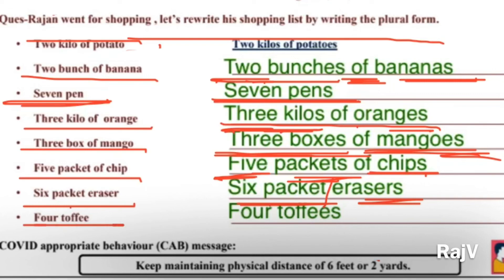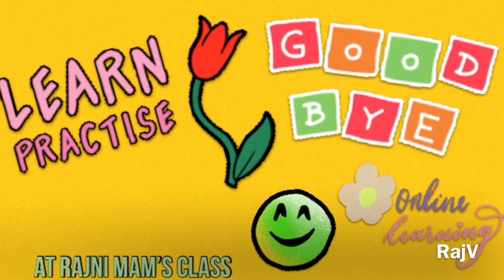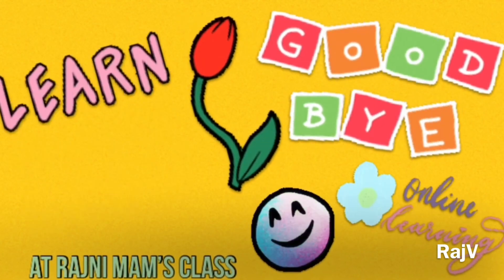Then is four toffee — toh hona chahiye four toffees. So I hope aapko aaj ki worksheet achche se samajh mein aa gayi hogi. Yahaan par aapke liye ek message hai: keep maintaining physical distance of six feet or two yards. Aap ismein jo physical distancing hai usse maintain karke rakhiye. Achcha sa mask paheniye, hand wash achche se kariye, aur saari aapni precautions lijiye. Take care of your health and keep smiling, keep studying. Thank you.